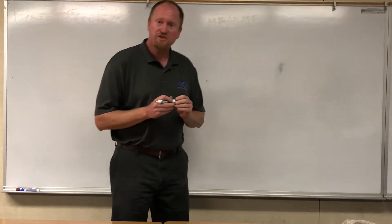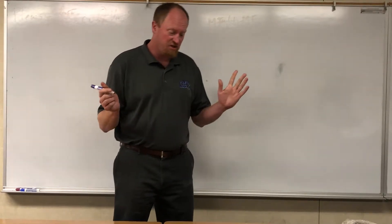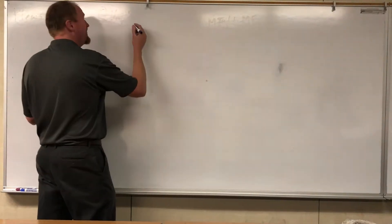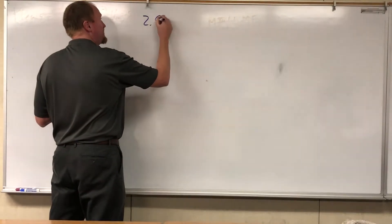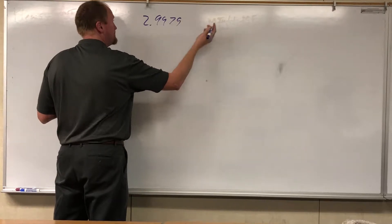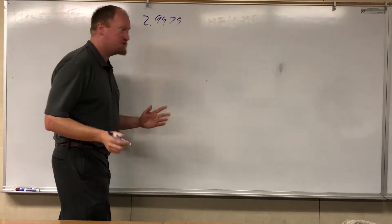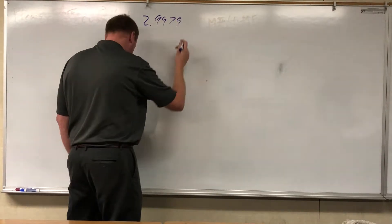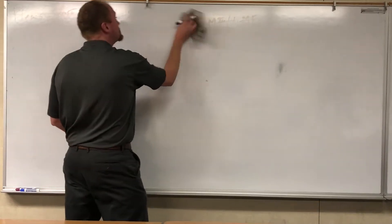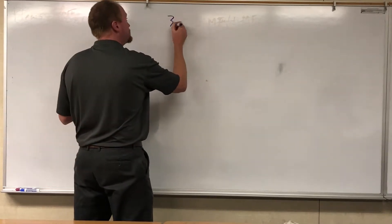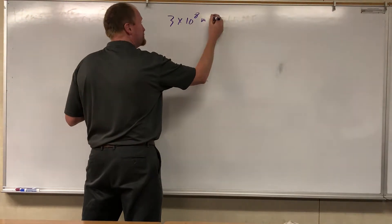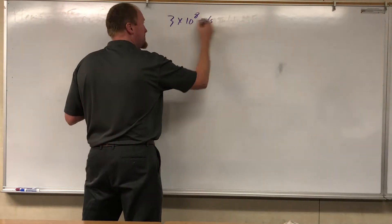So, I want to get started by, first off, how fast is the speed of light? The speed of light is 2.9979 times 10 to the 8th, but for simplicity's sake, we're just going to say it's 3 times 10 to the 8th meters per second.